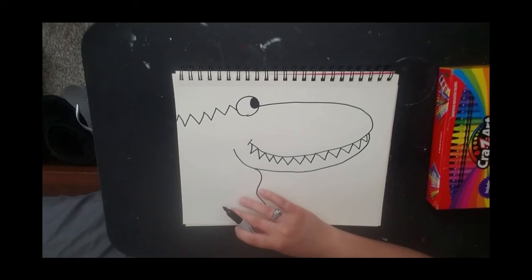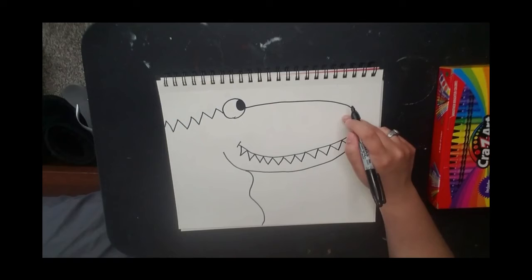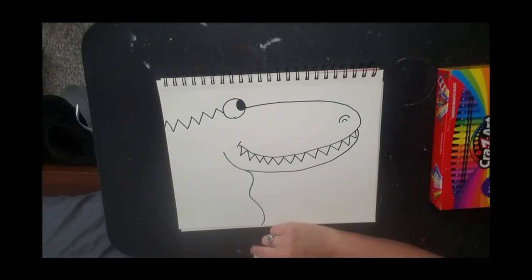From here you can give him a little nose. Watch what I do. Right at the tip of his nose I'm going to do a curved line and then on the inside of that curved line I'm going to put a baby curved line. Look at that little baby curved line. Now he has a cool nose.